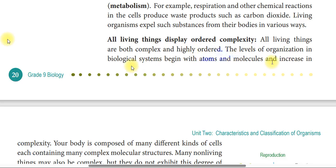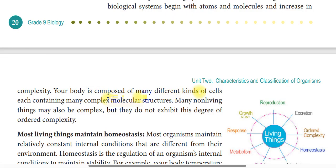The level of organization in the biological system begins with atoms and molecules and increases in complexity. Your body is composed of many different kinds of cells, which contain many complex molecular structures. Many non-living things may also be complex, but they do not exhibit this degree of ordered complexity.